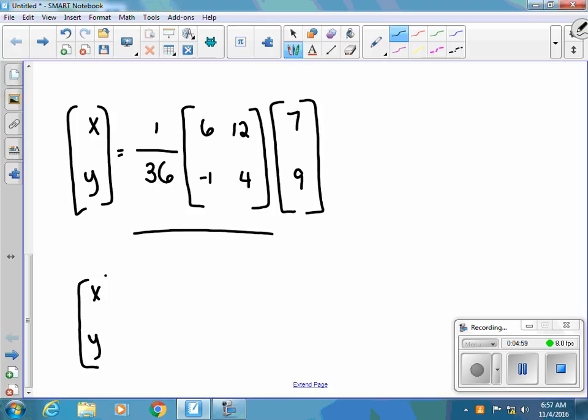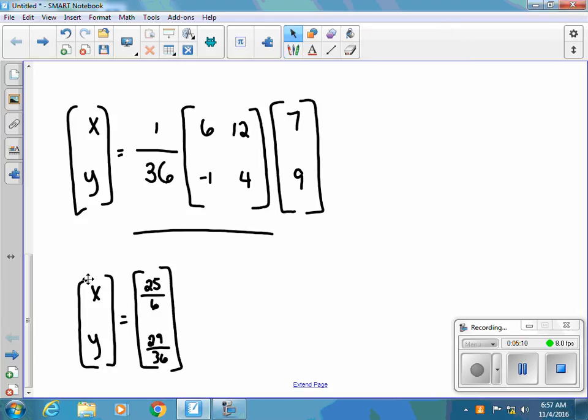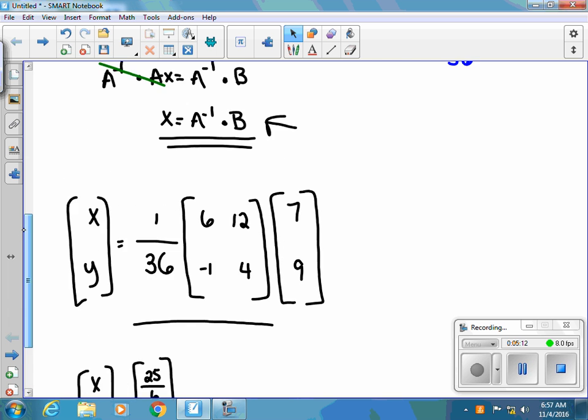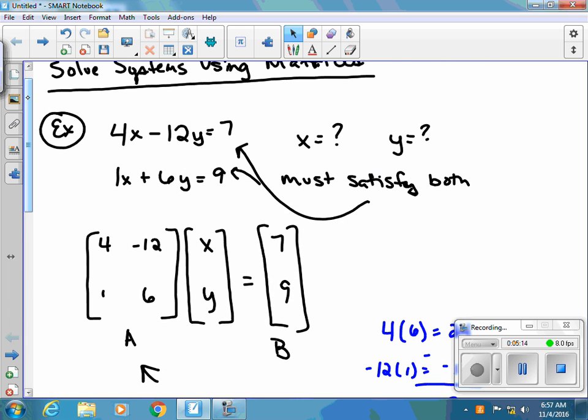So after plugging this in, I have x, y equals 25 over 6 and 29 over 36. So what that means is my x value that satisfies my beginning system is 25 over 6. The y value that satisfies both equations is going to be that 29 over 36.